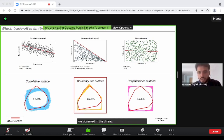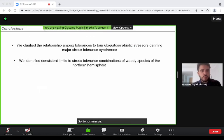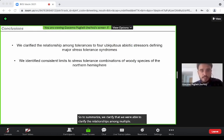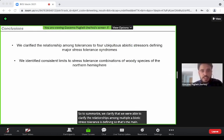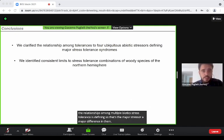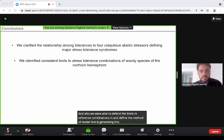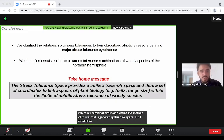To summarize, we were able to clarify the relationships among multiple abiotic stress tolerances, defining the major stress-tolerant syndrome. We were also able to identify the limits to stress-tolerant combinations and define the trade-off model that is generating the space.